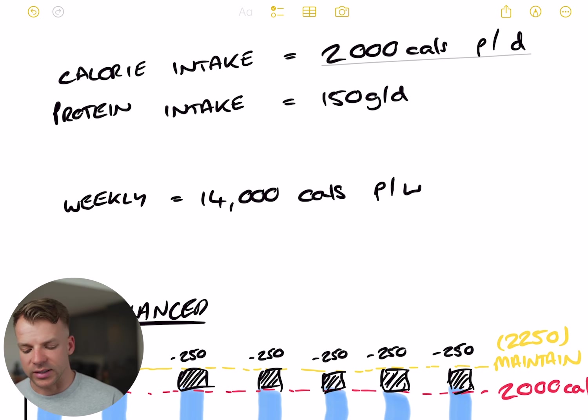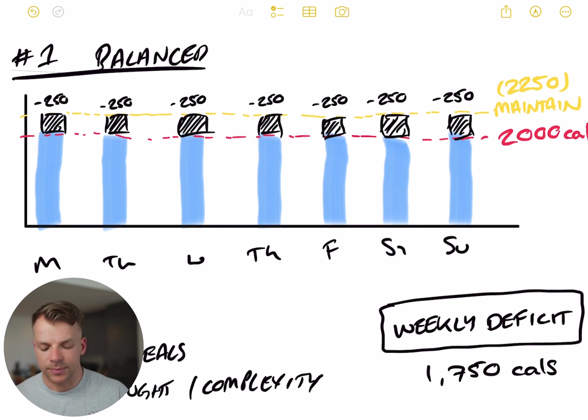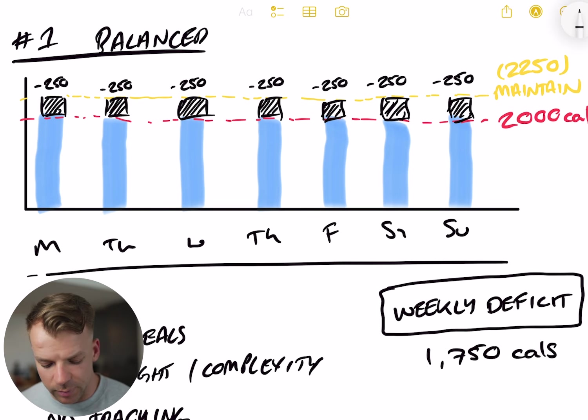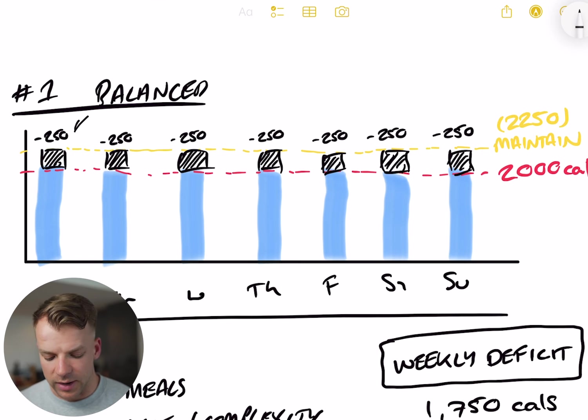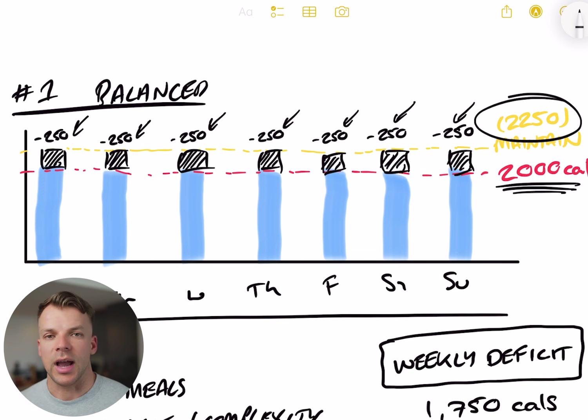The first way that you can approach this is what I would call planned balanced. This is where you have a Monday to Sunday intake of food. As you can see at the bottom there, every single day of the week, you will have a 250 calorie deficit split evenly throughout the week. Let's just say, for example, your maintenance calories was 2,250. If you had a 250 calorie deficit, that would mean you're eating 2000 calories per day, which would put you in a fairly substantial deficit and you would absolutely lose weight with this intake.